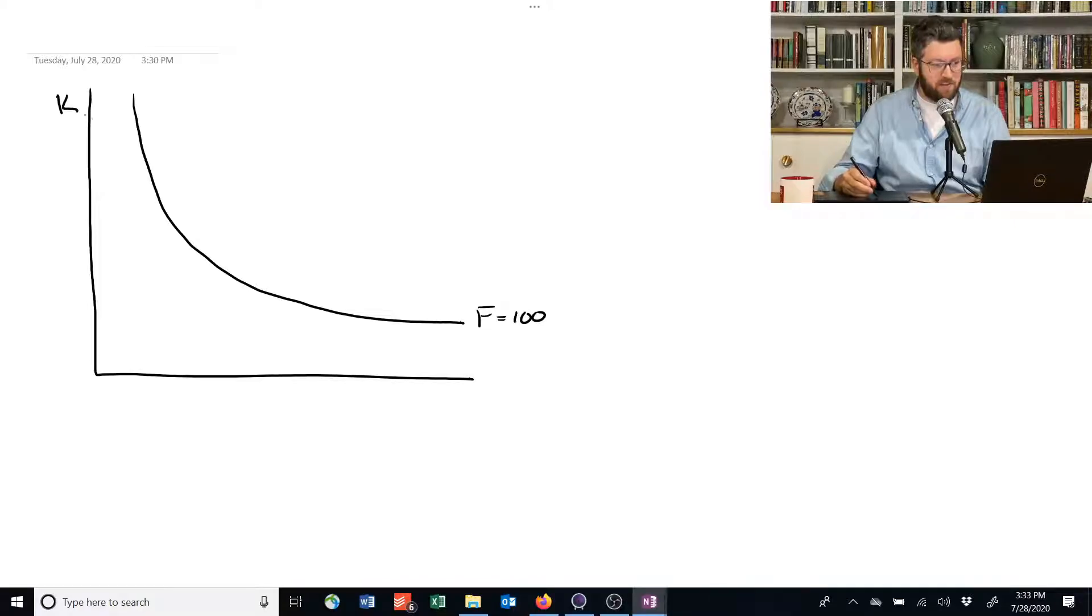We've got capital on this axis and labor on this axis. I should say the choice to put L on the bottom and K on the top, that's arbitrary. I could have picked it the other way around. If I did, you just switch everything. There's no set rule about which one goes where. Anyway, this is how I'm drawing it today.